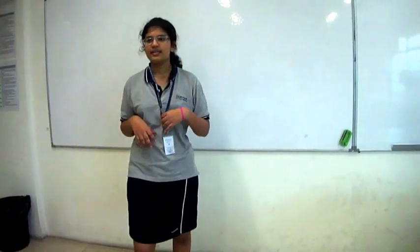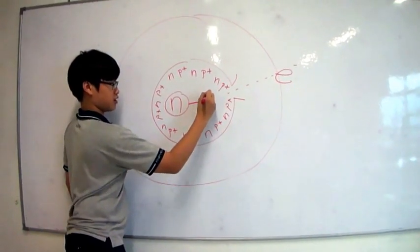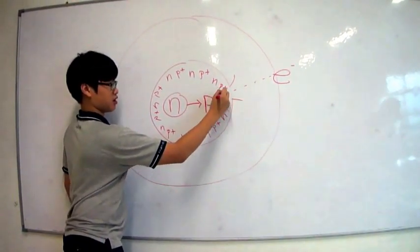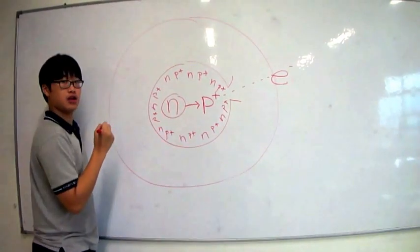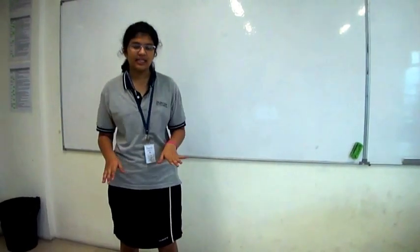The second one is beta decay. It occurs when a neutron is turned into a proton and the electron is emitted from the nucleus. The atomic number increases and the mass slightly decreases.